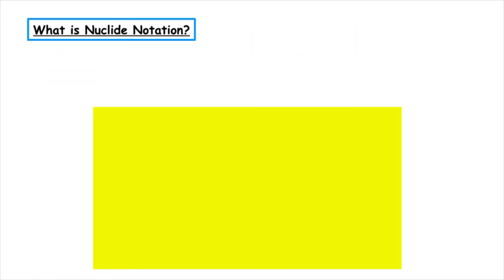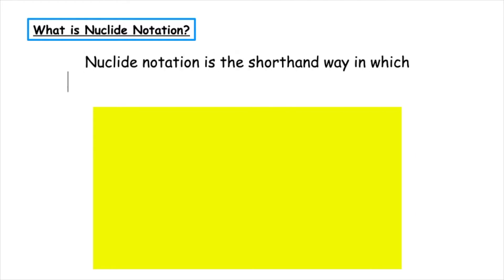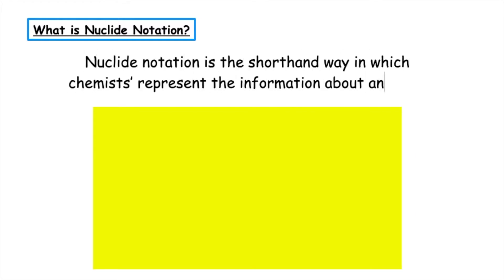What is nuclide notation? Nuclide notation is the shorthand way in which chemists represent the information about an atom.